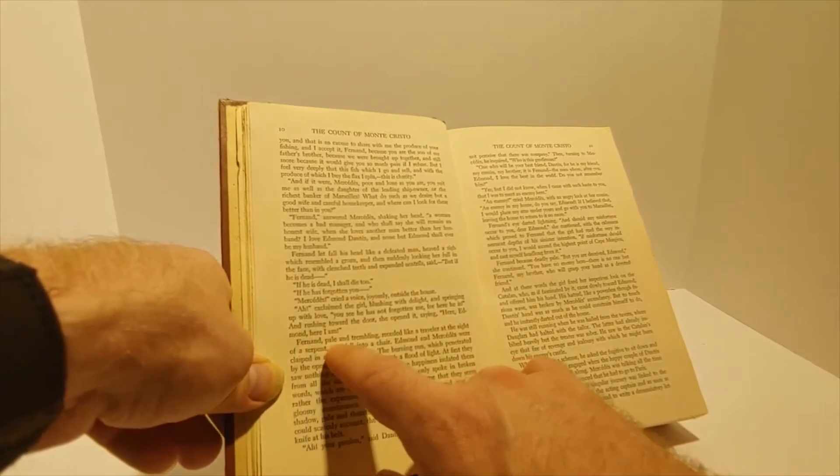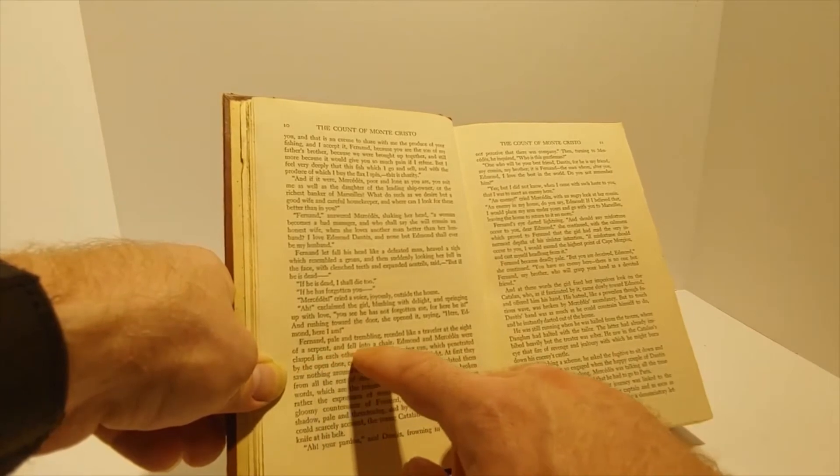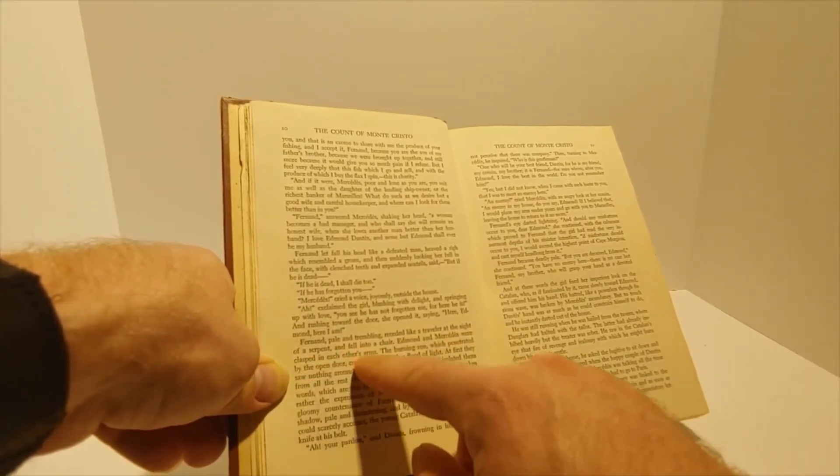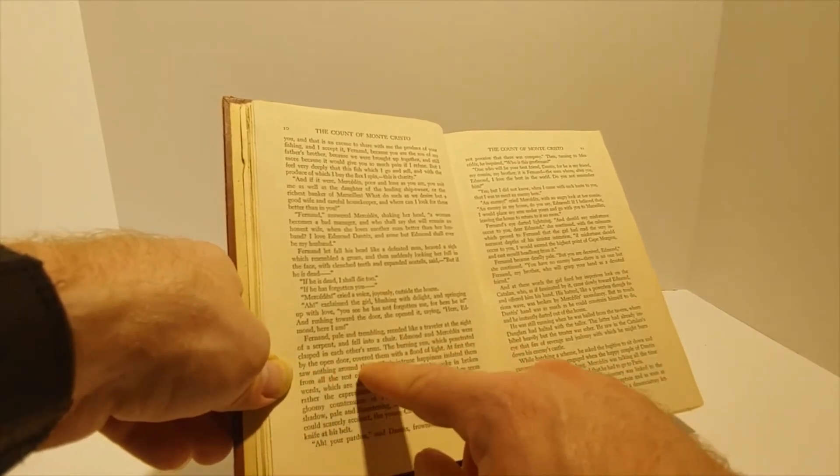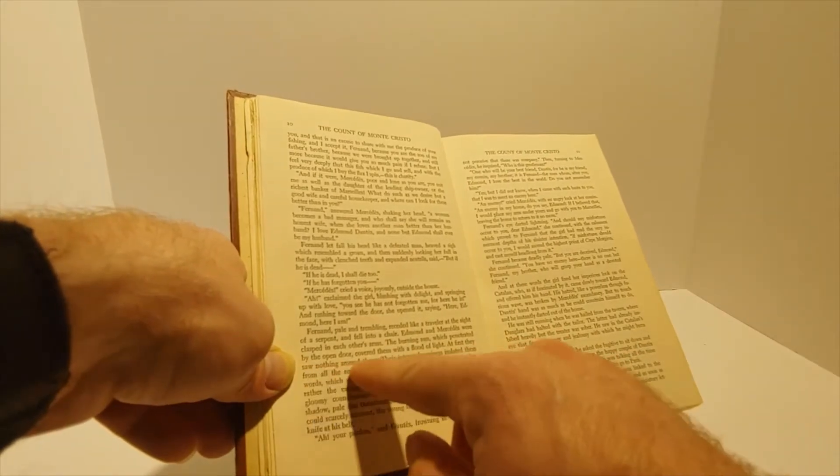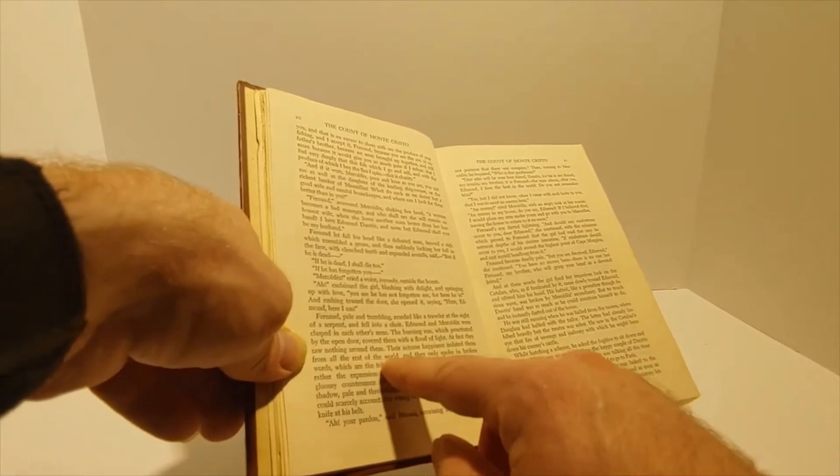Fernand, pale and trembling, receded like a traveler at the sight of a serpent and fell into a chair. Edmond and Mercedes were clasped in each other's arms. The burning sun, which penetrated by the open door, covered them with a flood of light. At first they saw nothing around them. Their intense happiness isolated them from all the rest of the world.